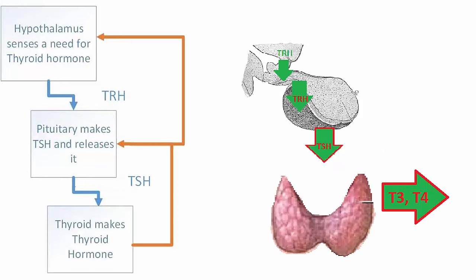When the TSH gets to the thyroid gland, it signals for the creation and release of thyroid hormone, referred to here as T3-T4. The thyroid hormone then circulates throughout the body and decreases the formation of TRH and TSH — negative feedback. The hypothalamus and pituitary are asking the thyroid to make T3-T4, and once it's made, they stop asking and the levels of TRH and TSH decrease.